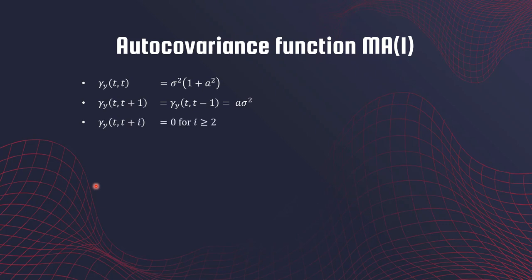Let's collect all the information we've calculated so far. The autocovariance function at t and t is (1+a²)*sigma², at t and t+1 or t-1 it is a*sigma², and anything with separation greater than 2 — that is, t and t+i where i is greater than 2 — this is zero.